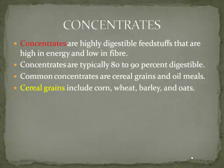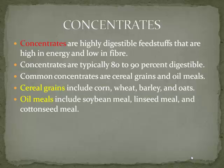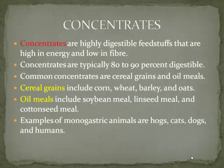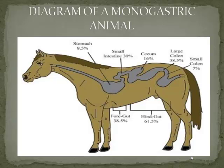Common concentrates are cereal grains and oil grains. Cereal grains include corn, wheat, barley, and oats. Oil grains include soybean meal, grain seed meal, and cottonseed meal. Examples of monogastric animals are horse, dogs, and pigs.